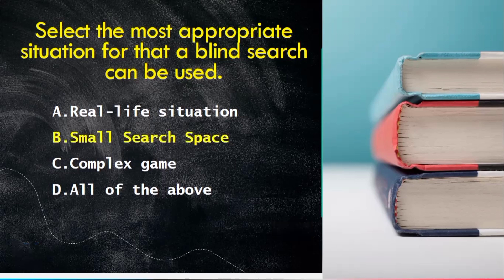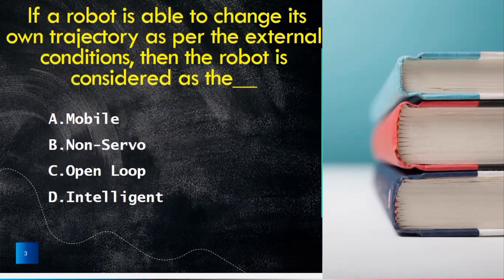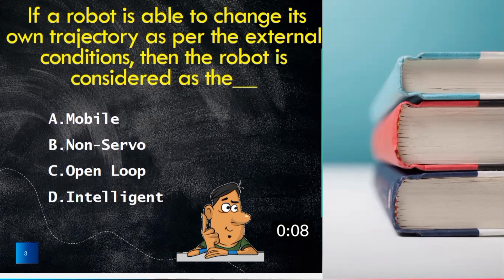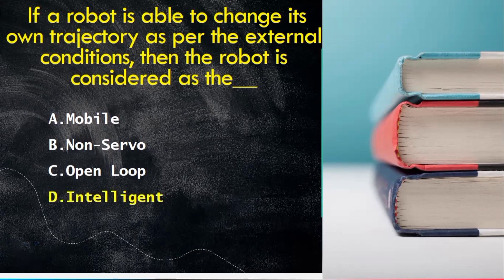Another question is if a robot is able to change its own trajectory as per the external conditions, then the robot is considered as the answer may be mobile, non servo, open loop or intelligent. The true answer is intelligent.